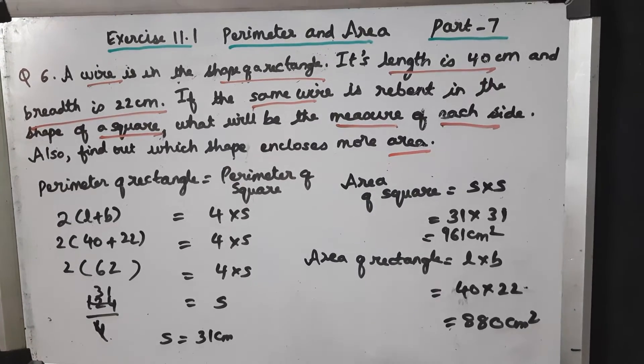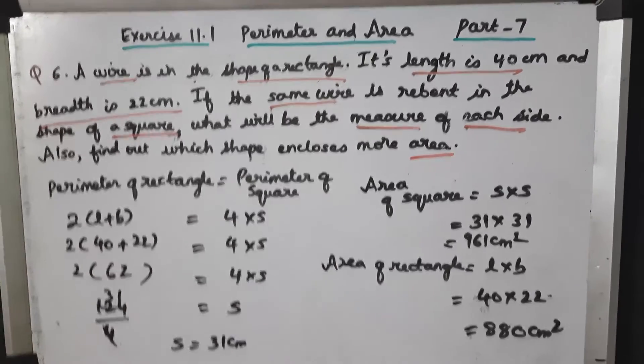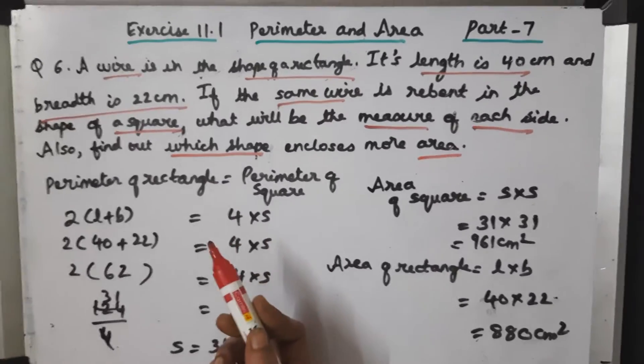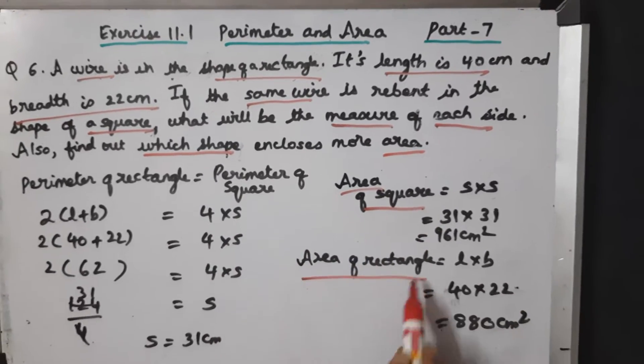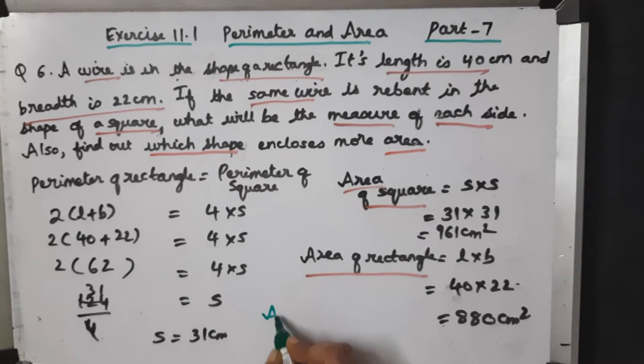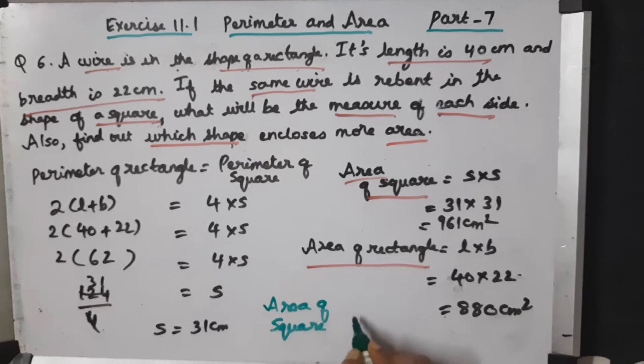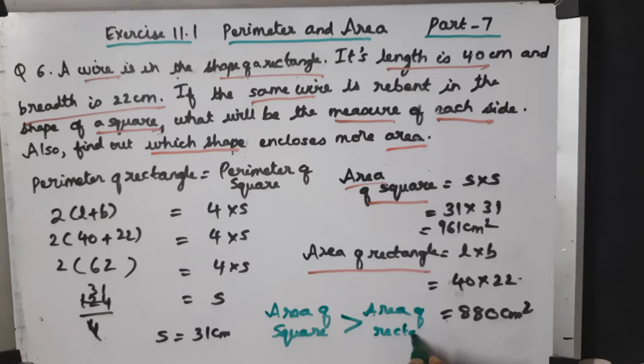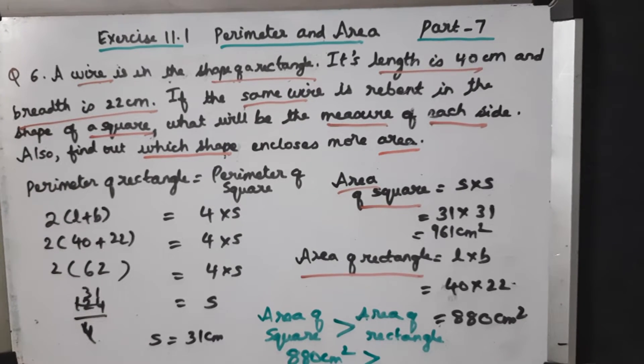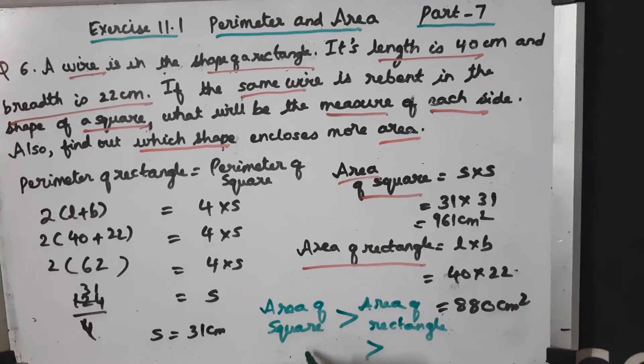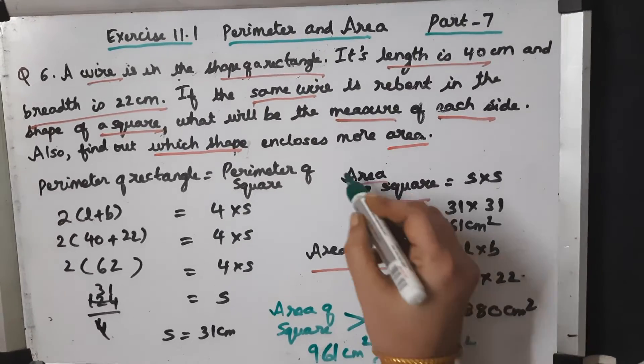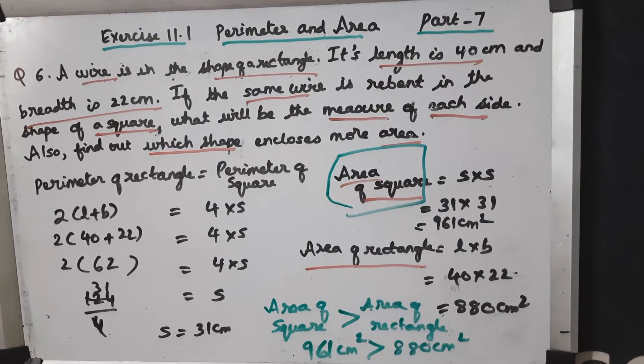Now when you look at both of them, the last part of the question asks to find out which shape encloses more area. We now know that area of square is more than area of rectangle because 961 centimeters square is bigger than 880. This clearly shows that area of square is more than that of the area of rectangle.